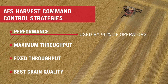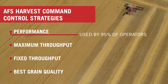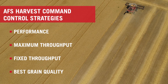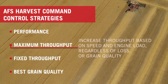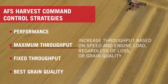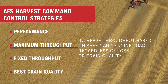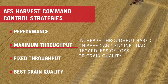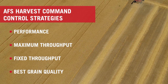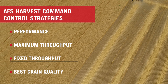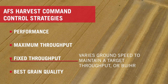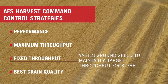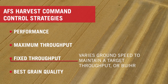Ninety-five percent of operators will be using performance. Selecting max throughput will increase throughput based on speed and engine load regardless of loss or grain quality. Selecting fixed throughput enables the combine to vary the ground speed to maintain an established target throughput or bushels per hour.